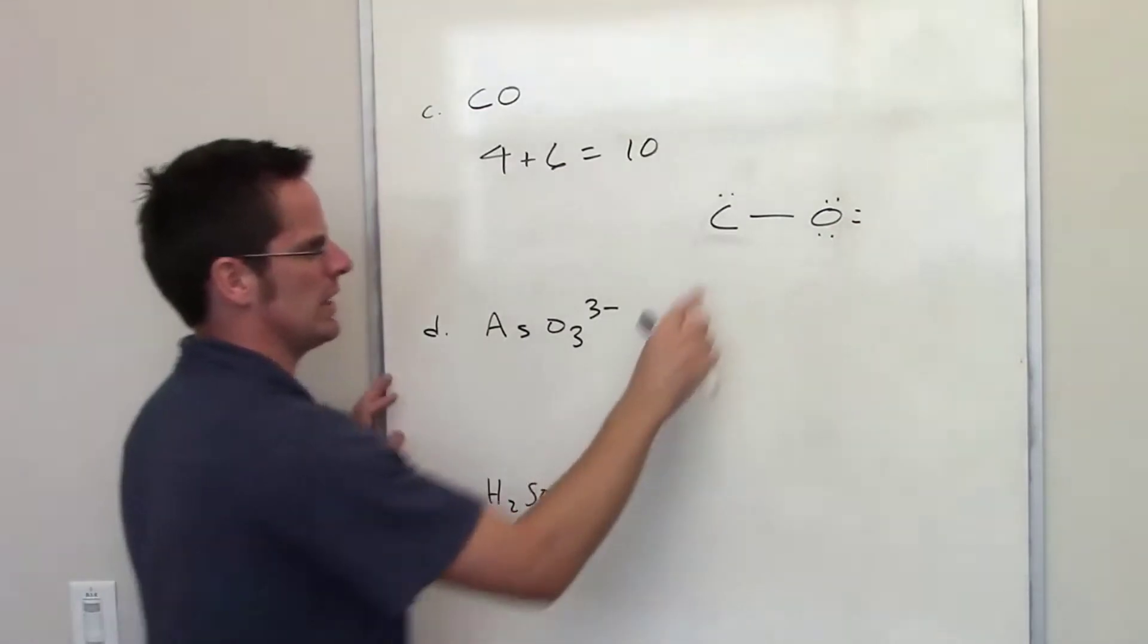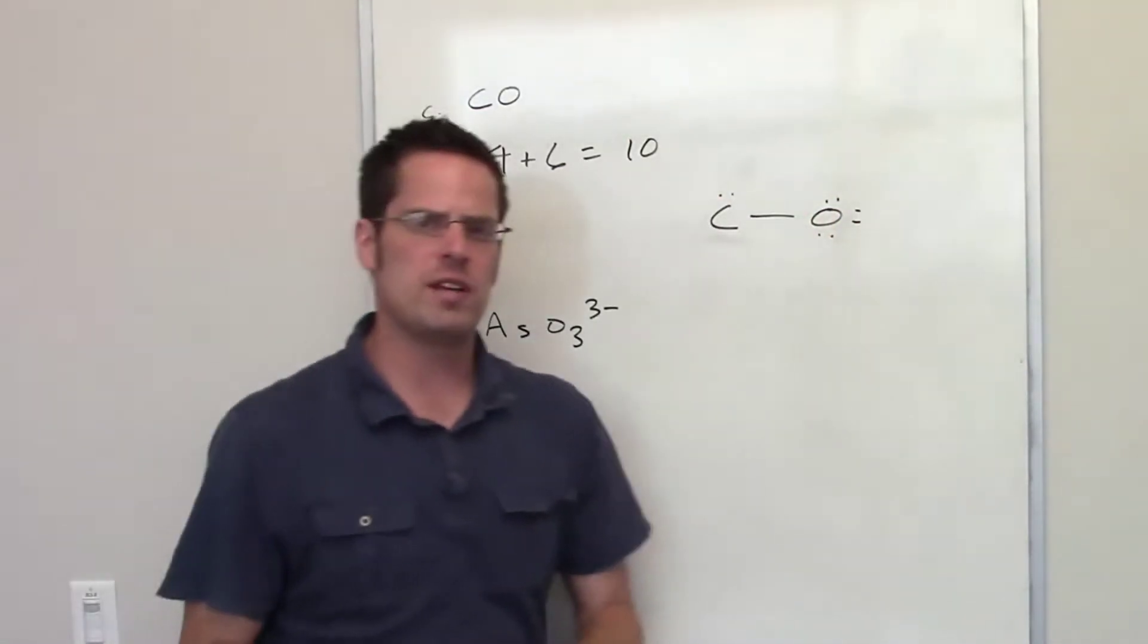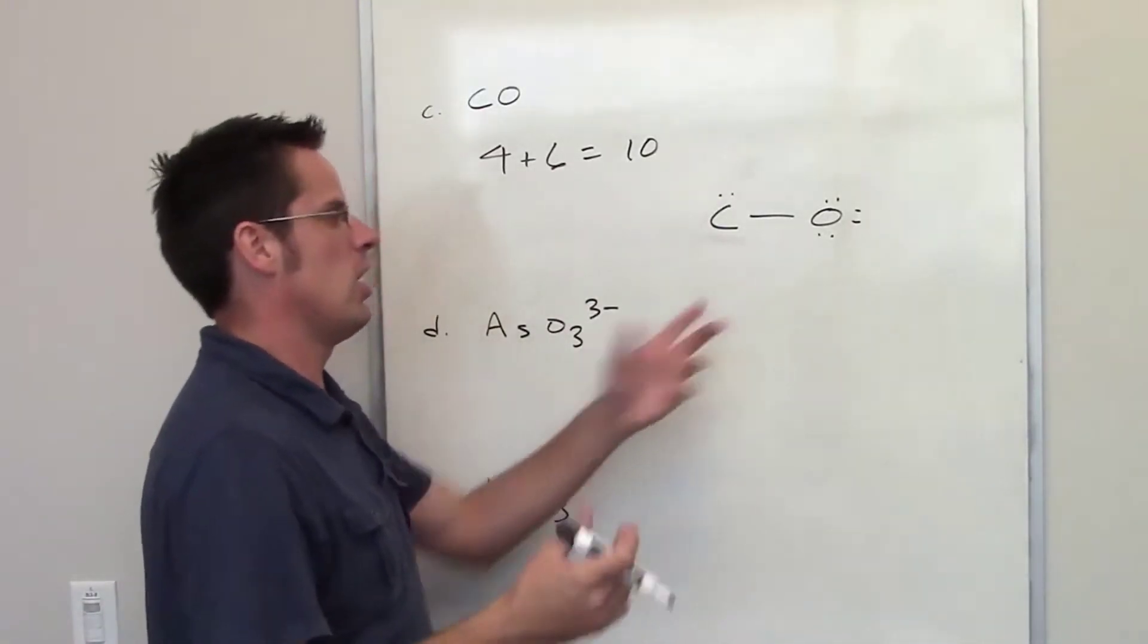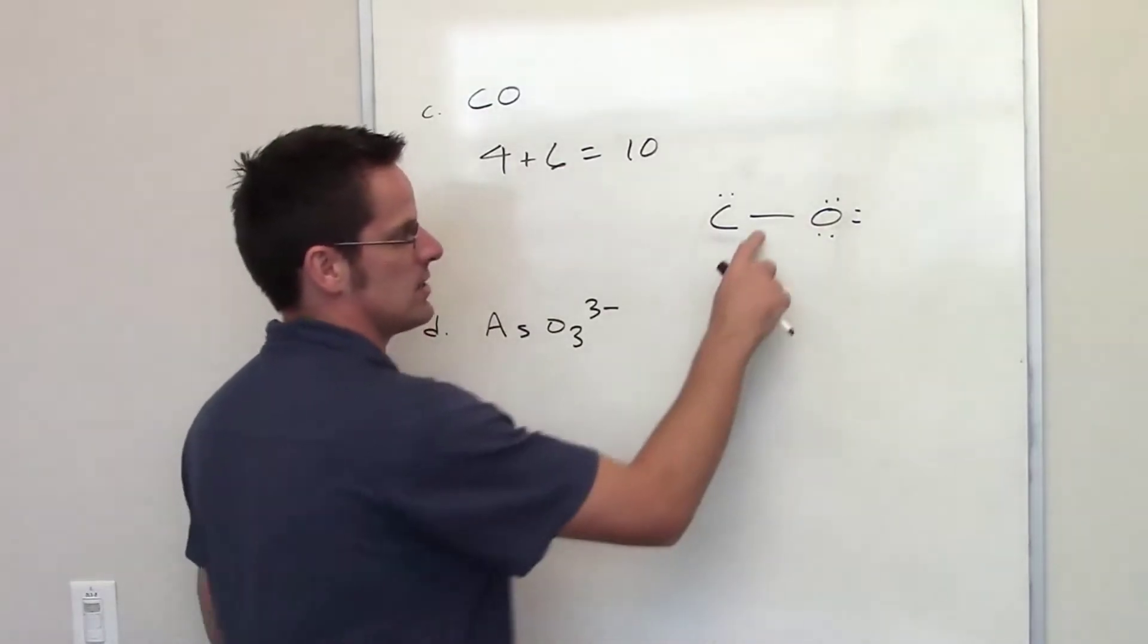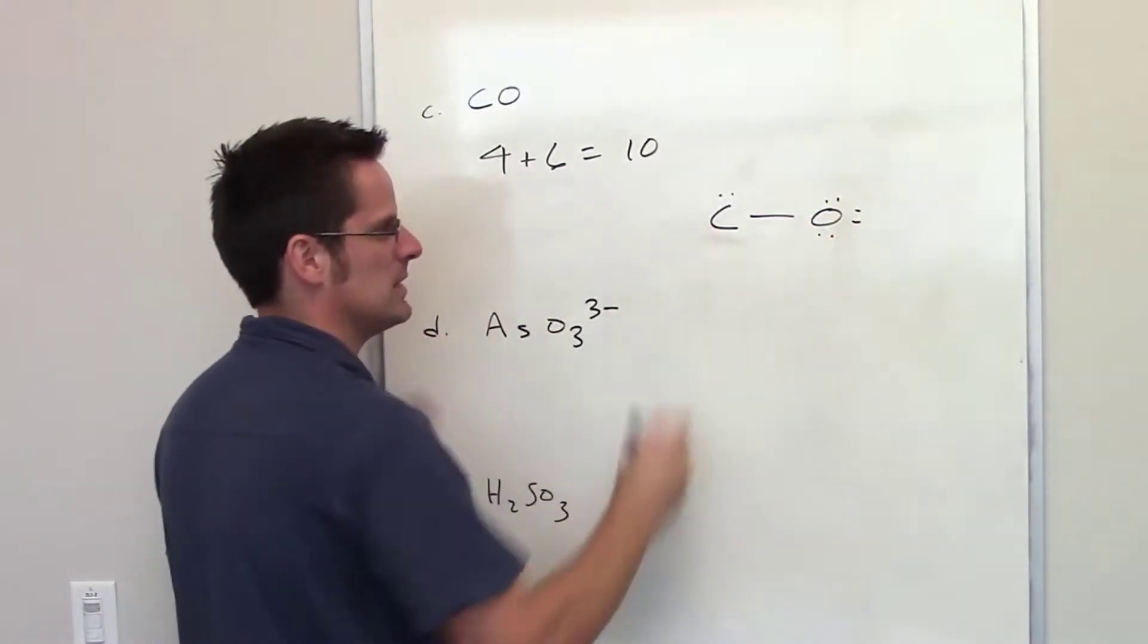So I think that's ten total electrons, two, four, six, eight, and ten. Do those elements all feel like they have eight electrons, or full octet? Well, not at all. Oxygen kind of does, because there are two electrons here, and it's got four, six, eight around it, but carbon does not.